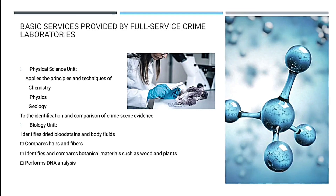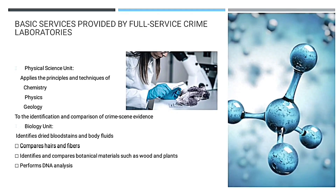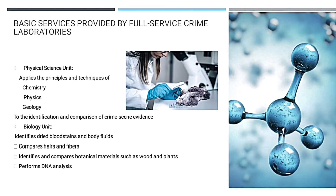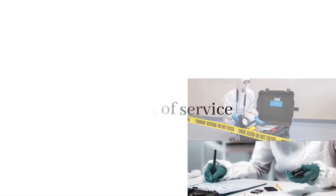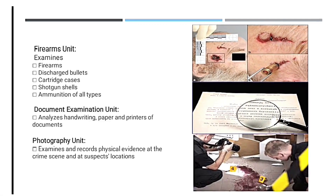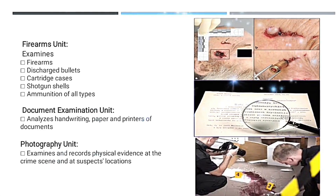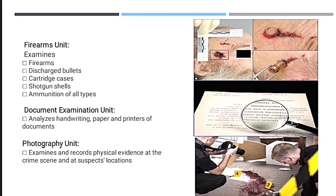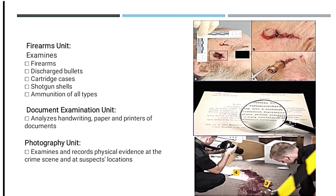The biology unit also identifies and compares botanical materials such as wood and plants, and performs DNA analysis. The firearms unit examines firearms, discharged bullets, cartridge cases, shotgun shells, and ammunition of all types. The document examination unit analyzes handwriting, paper, and printers of documents and photographs.